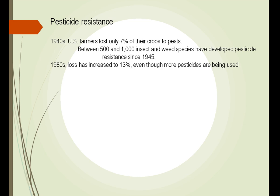We still have a huge problem with pests. In 1940, we only lost 7% of our crops to pests. New insect and weed species have developed since then, and despite the fact that our use of pesticides has gotten better, we have actually increased our loss to 13%.